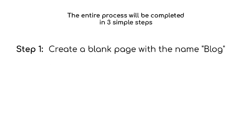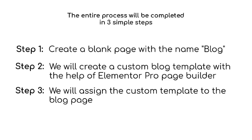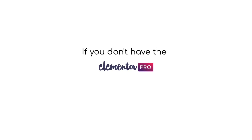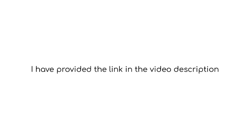Step one: create a blank page with the name blog. Step two: we will create a custom blog template with the help of Elementor Pro Page Builder. Step three: we will assign the custom template to the blog page. If you don't have Elementor Pro Page Builder, you can go into the video description and get it for just $10. I have provided the link in the video description itself.